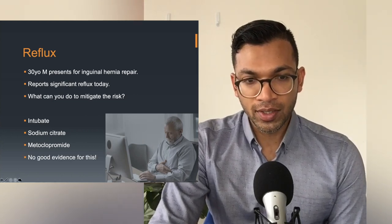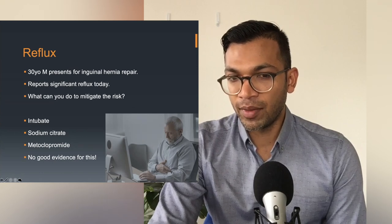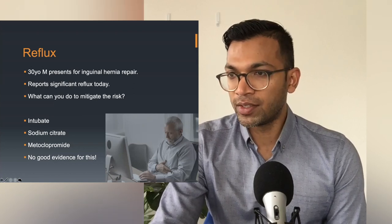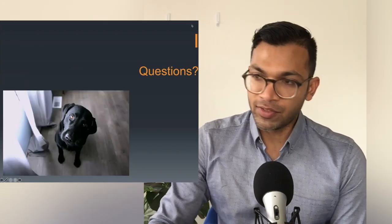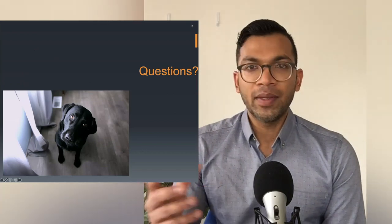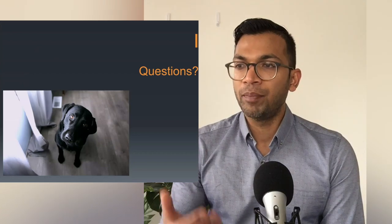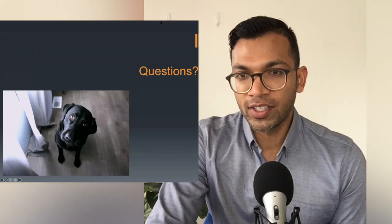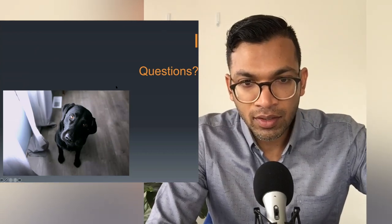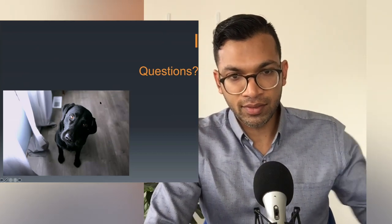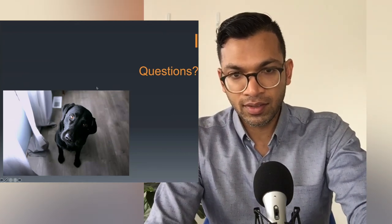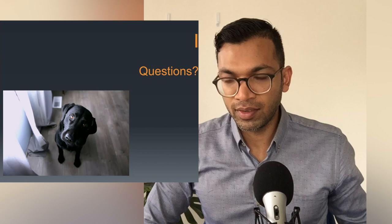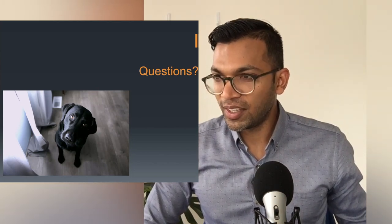There's not a lot of good evidence for these measures, but as a trainee, I want you to have insight into this and be able to offer it. That was the optimization section — you've done a history, identified problems, and realized the patient could be in better condition for their elective or emergent operation. A question came up: with RSI, if someone has severe reflux and was fasted, when would you decide to do a rapid sequence induction — would you assess if your treatment like sodium citrate has worked?